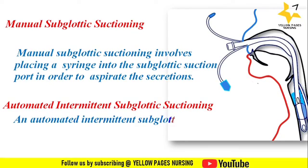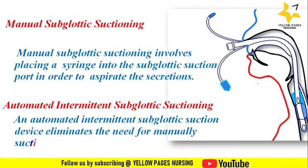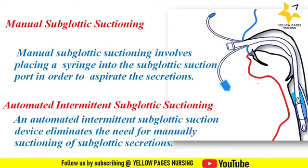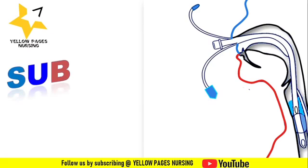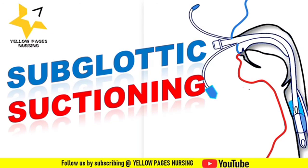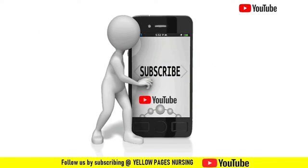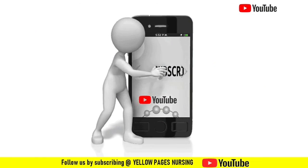An automated intermittent subglottic suction device eliminates the need for manual suctioning of subglottic secretions. It also provides the ability to suction the patient in a closed system to prevent cross-contamination. This concludes our discussion on subglottic suctioning — please like, subscribe, and hit the bell icon for instant notifications. Thanks for watching and have a nice day.